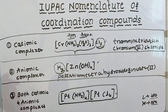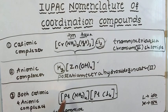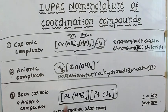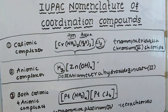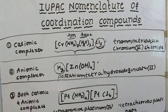The ligands are tetramine. The metal is platinum — tetraamine platinum(II). For the anionic part, there are two chloride ligands. Since this is an anionic complex, the ligand name ends with -ido, giving tetrachloridoplatinate(II).